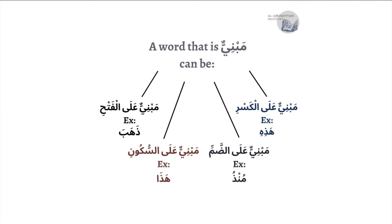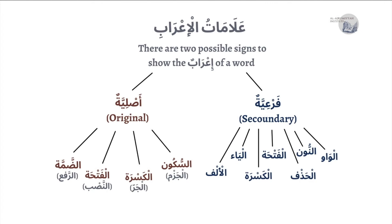A word that is Mu'rab — a word that can accept I'rab — can be Mu'rab with the original signs (A'lamat Asliya), or it can be Mu'rab with secondary signs (A'lamat Fara'iya), or a bit of both. A'lamat is the plural of 'Alam, which means sign. So A'lamat al-I'rab are the signs of I'rab: the Dhammah for Raf', the Fathah for Nasb, the Kasra for Jarr.